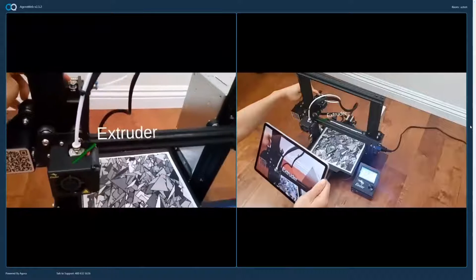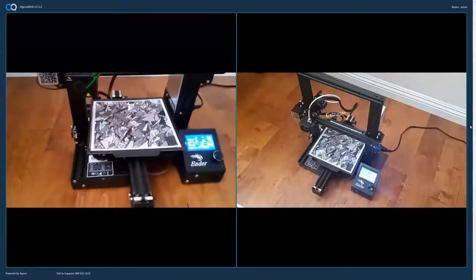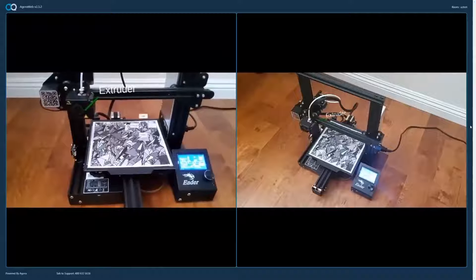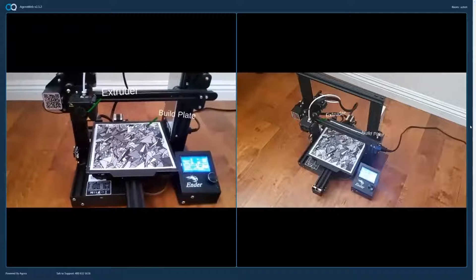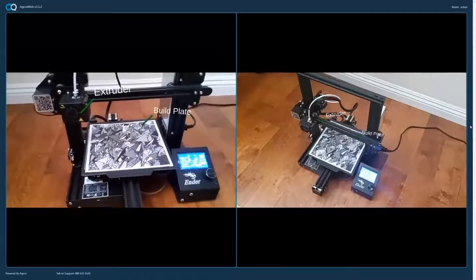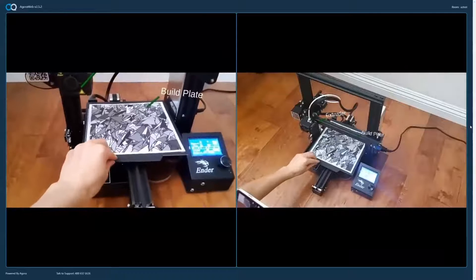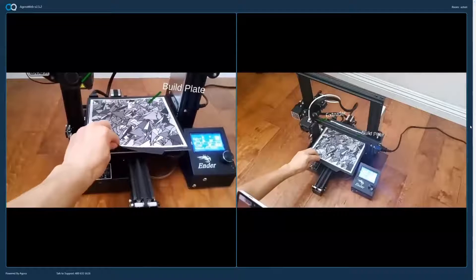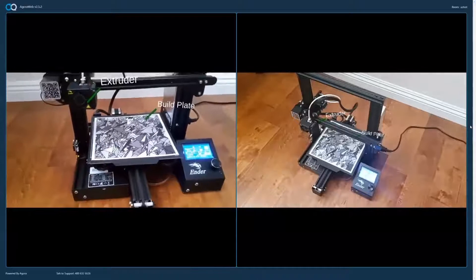Different printers might have different ways of extruding the filament. The next part is this flat surface in the middle, called the build plate. This is where the filament is deposited to create the print. This printer has a removable top surface to make the print easier to remove.